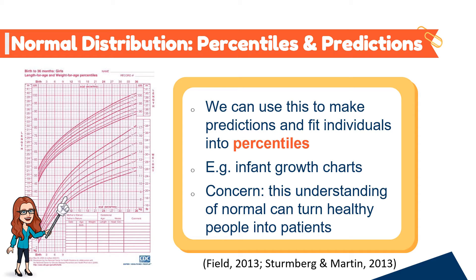Standard deviations can also be used to describe where most data should fall if normally distributed, allowing us to make predictions and fit individuals into percentiles. A really good example of percentiles is infant growth charts, which many healthcare professionals and parents in our class will be familiar with. A critique within healthcare is that understanding normal this way can turn healthy people into patients. A further issue is that these statistics don't answer questions about the relevance or meaningfulness of the outcome — they just tell us there is a statistically significant difference between groups.